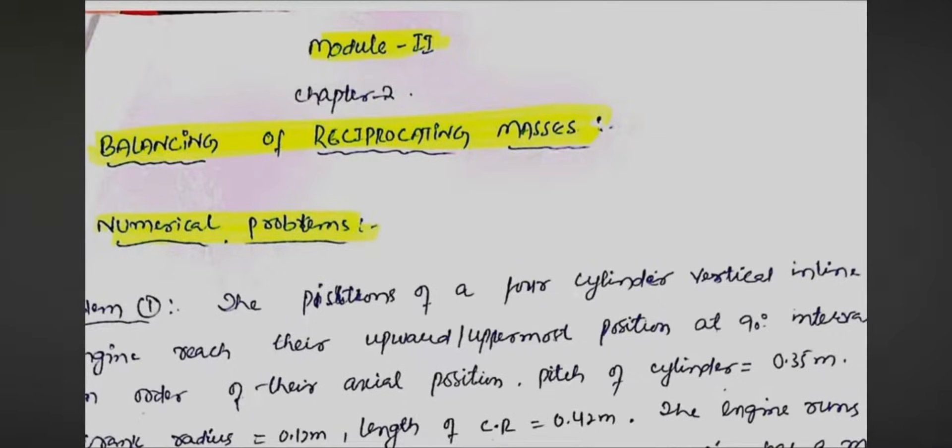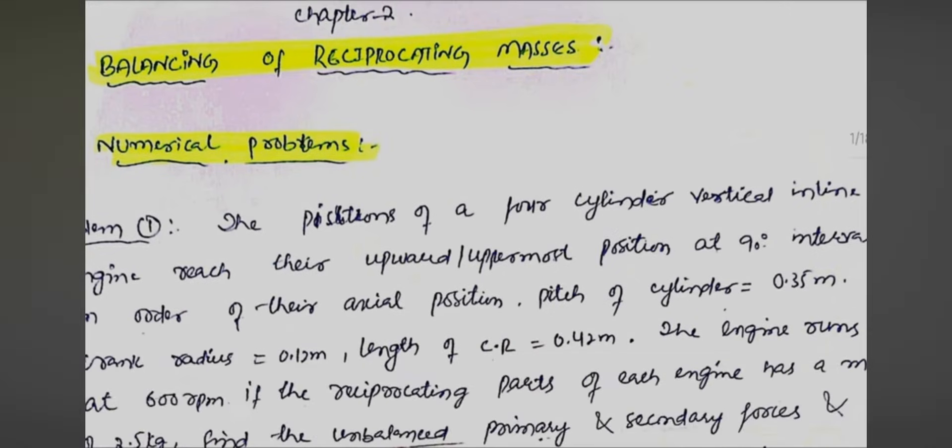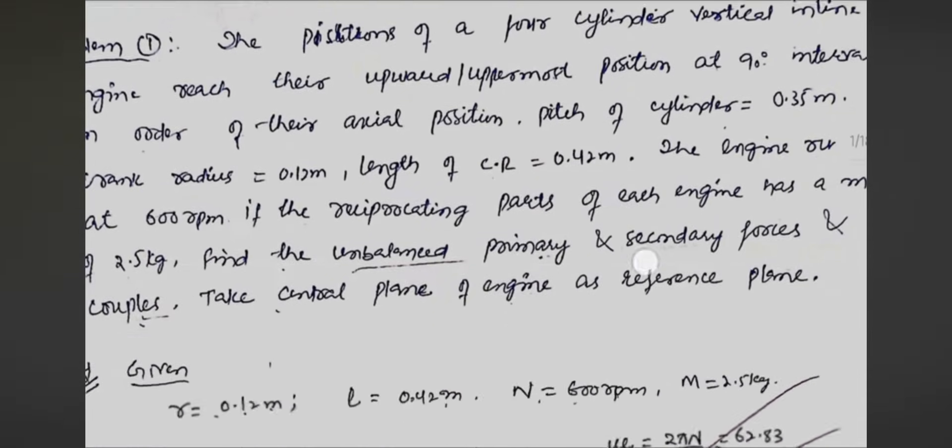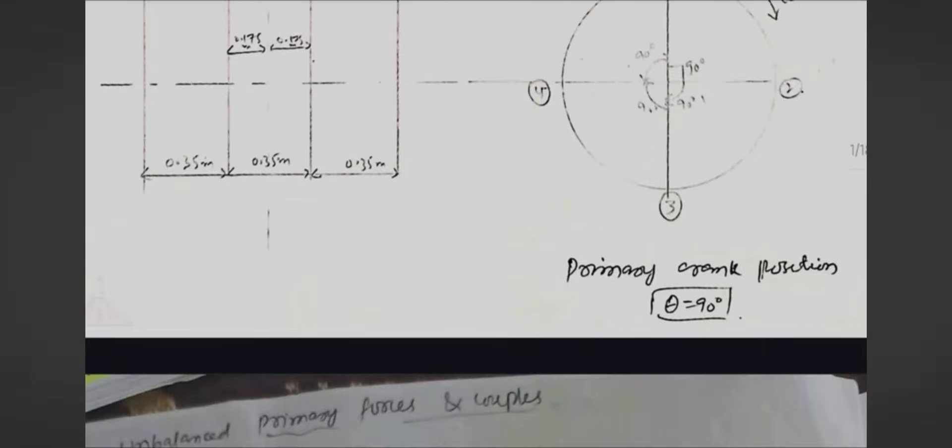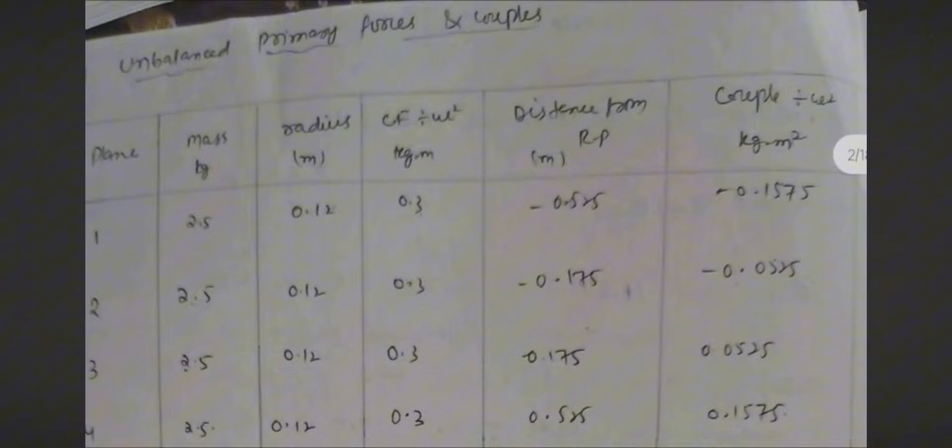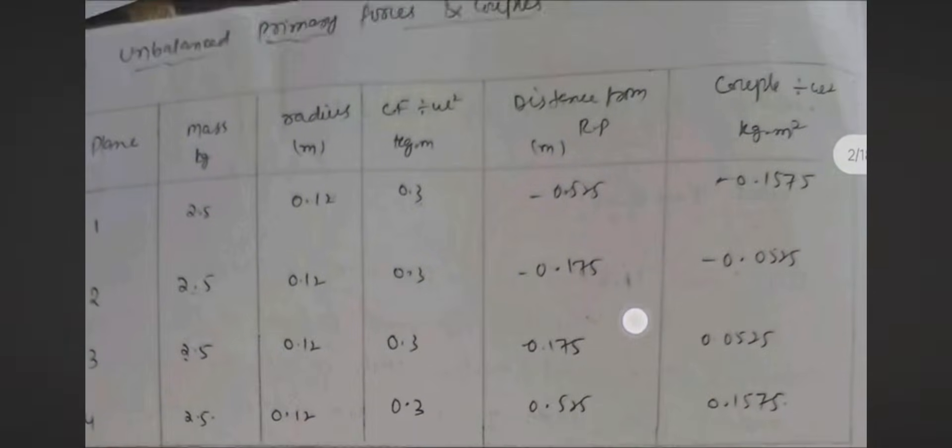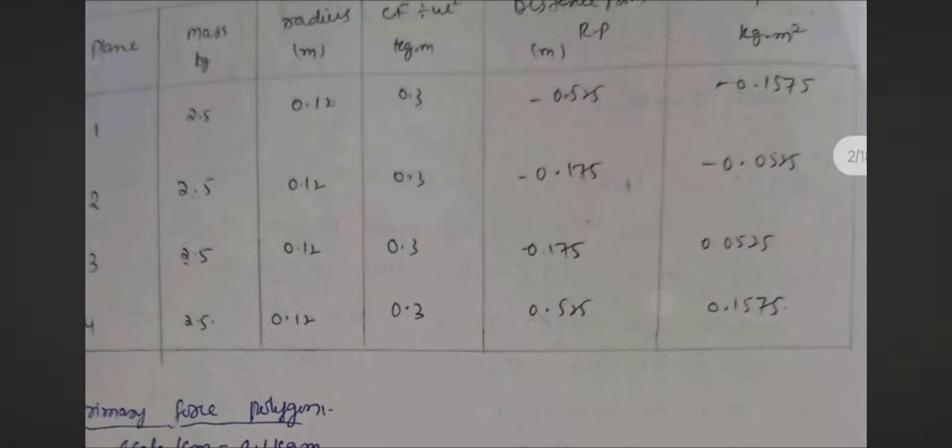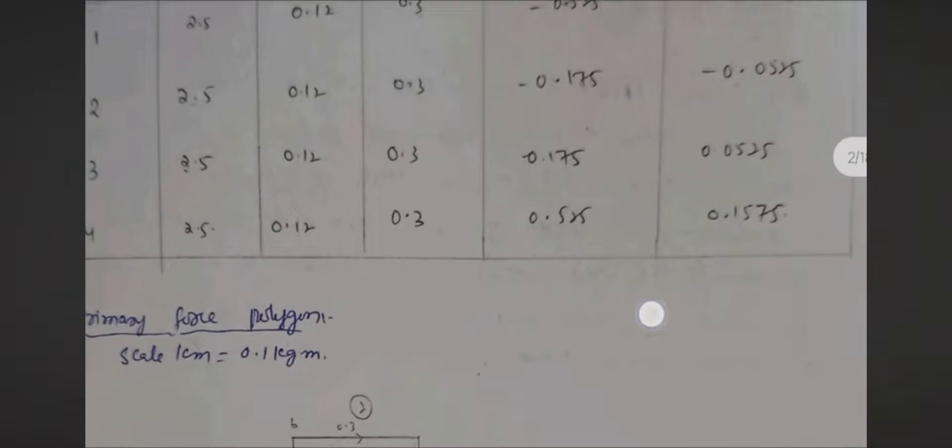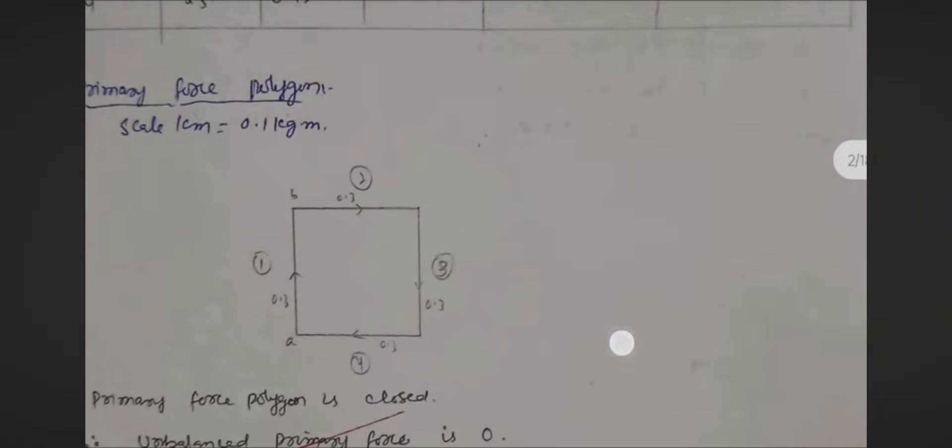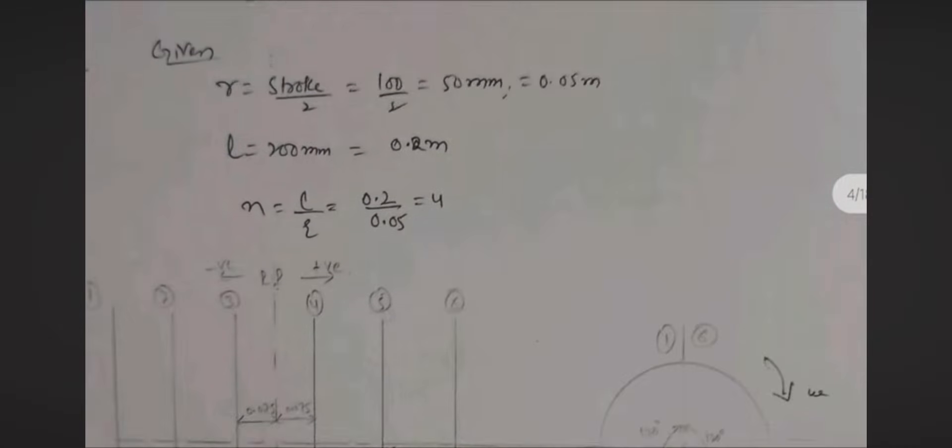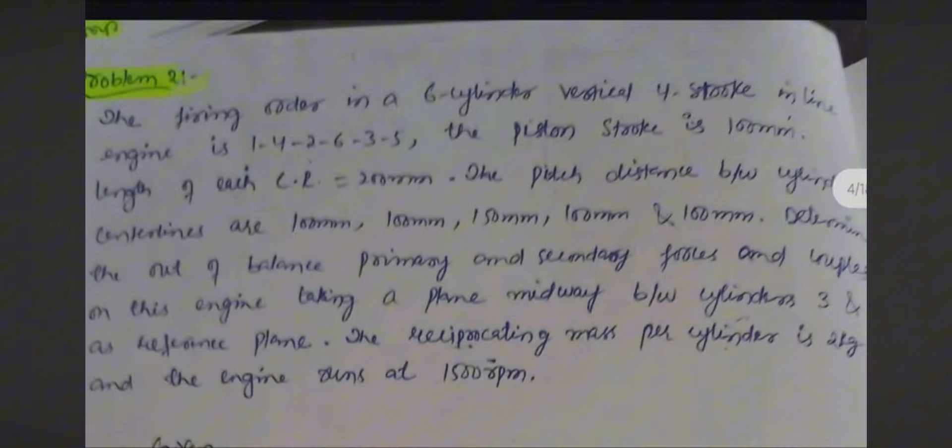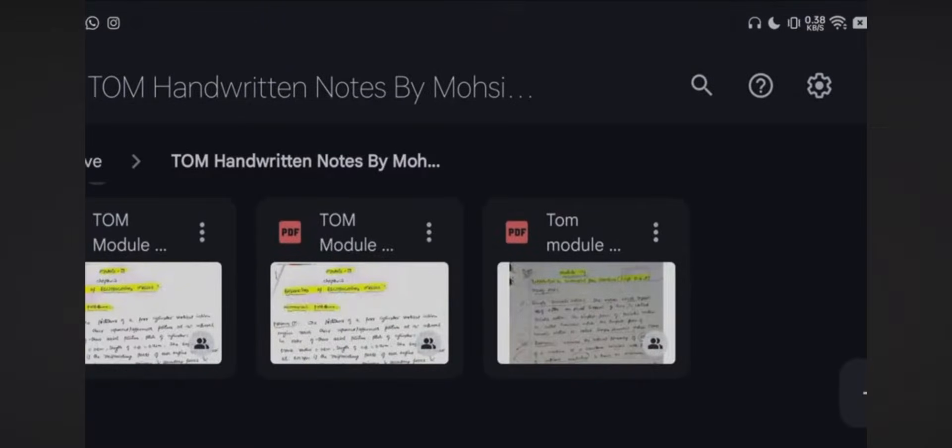This is your balancing of reciprocating masses numerical problems. Whatever problems I have written here, make sure you will go through it and practice a lot. You will easily get 15 marks from these particular questions. If you are able to draw this table you will get easily six marks for this table, then later on for the diagrams you will get full marks. Make sure you will go through these questions in order to grab 20 marks from this particular module. No need to worry for the handwritten notes, I will provide the link in the description box.